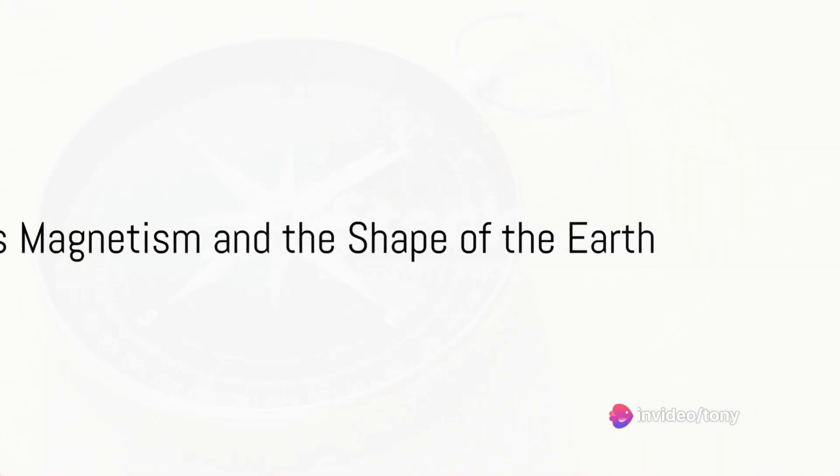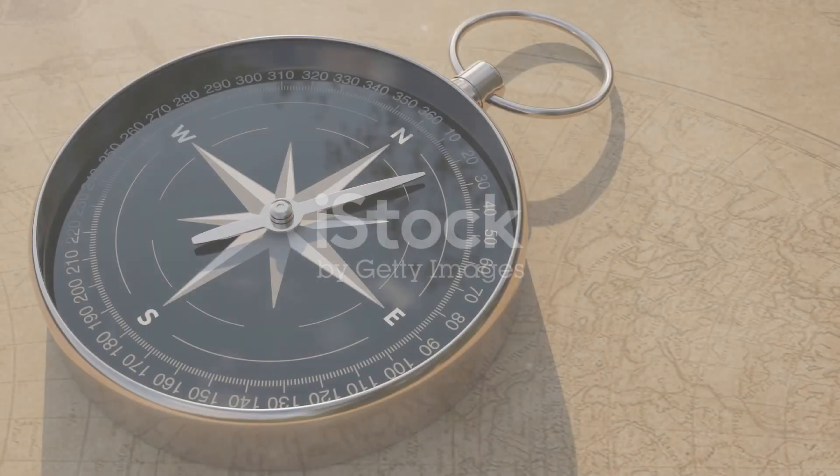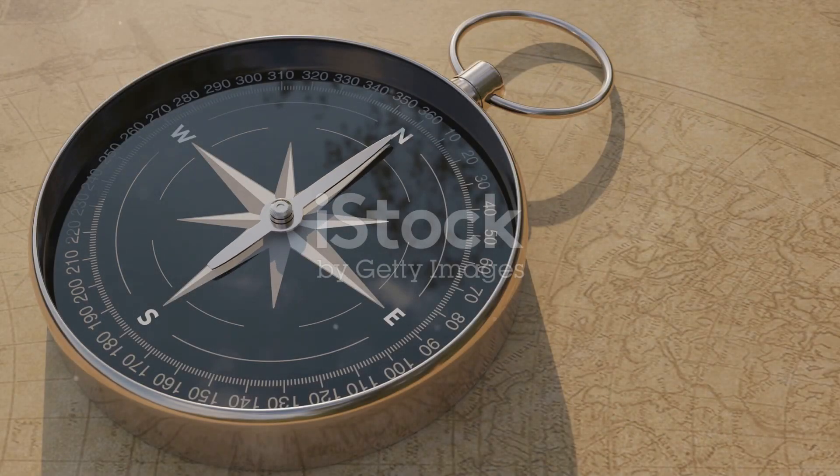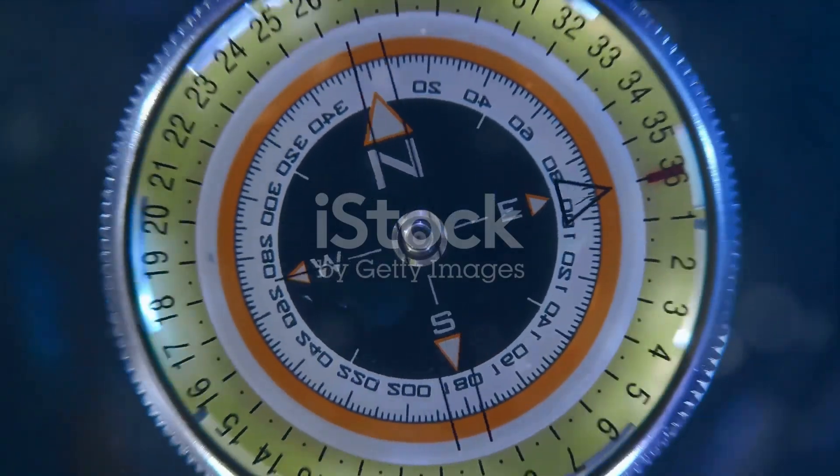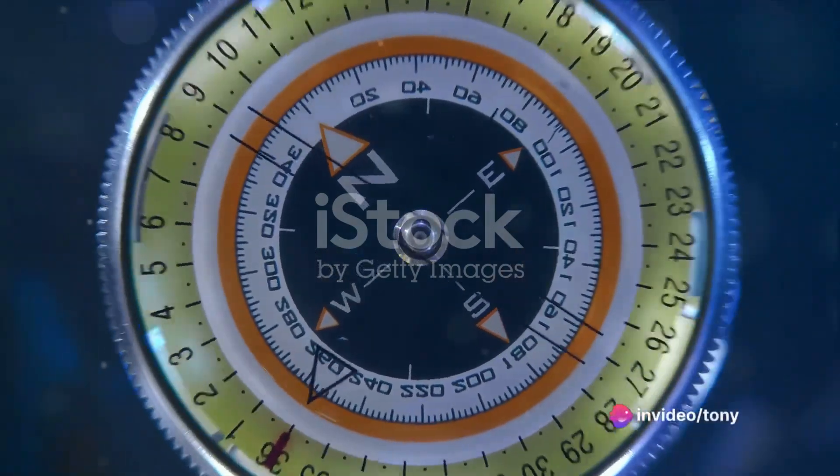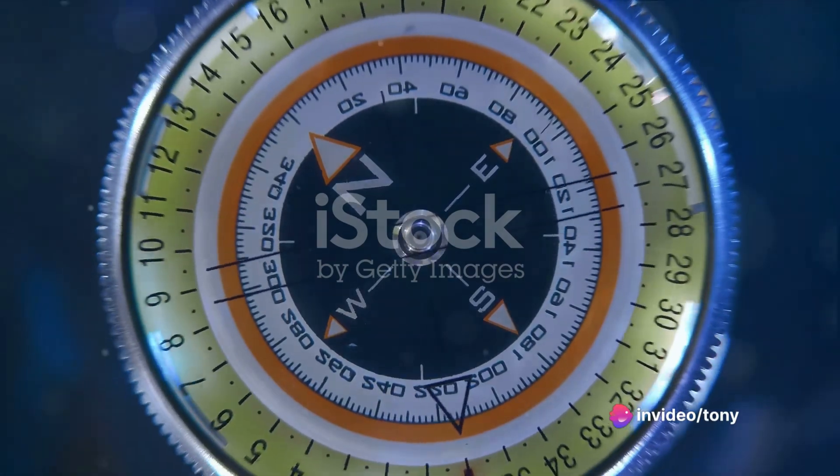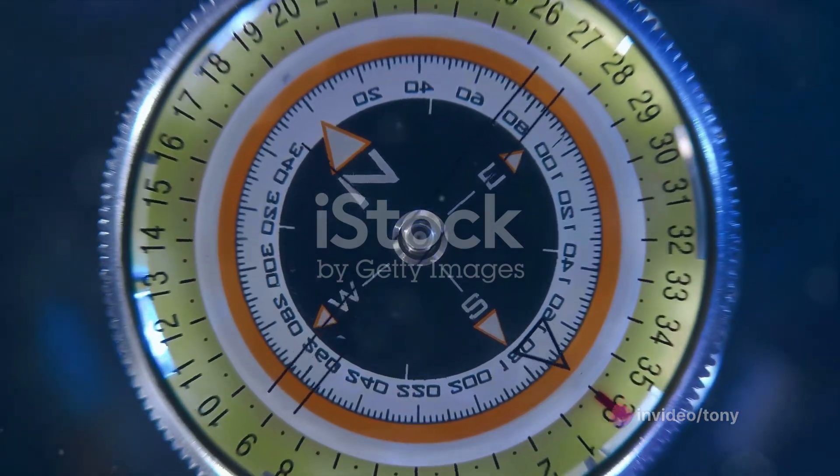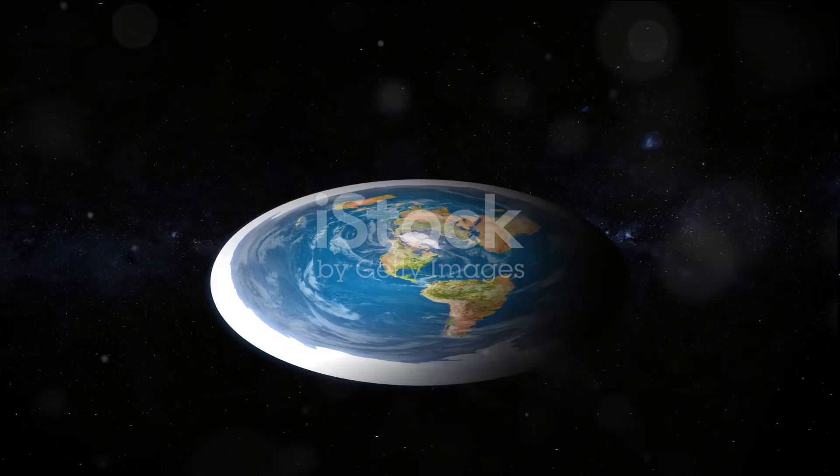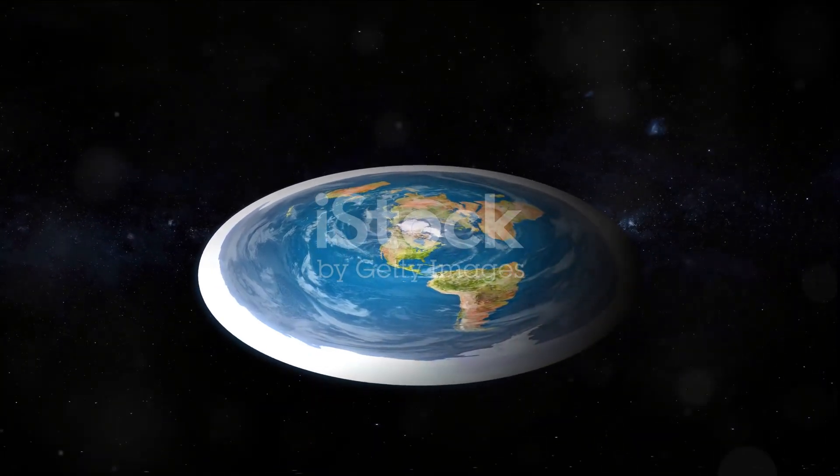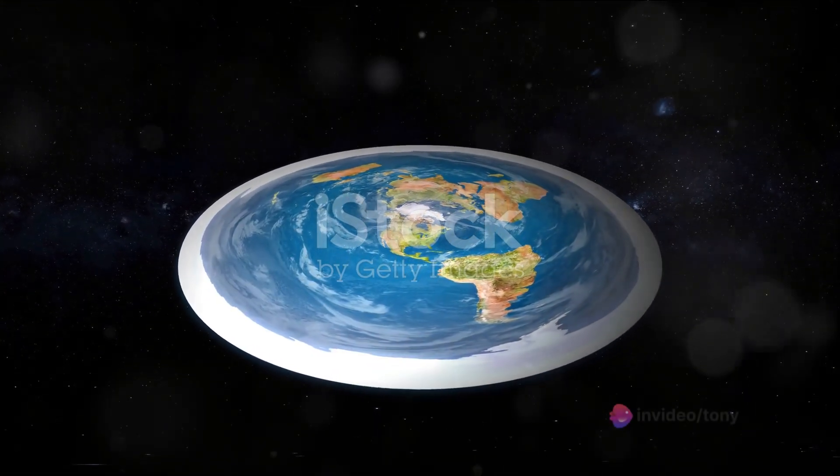Now, how does the concept of Earth's magnetism relate to its shape? If the Earth were flat, our compasses wouldn't work as they do. They point towards the North because of the Earth's magnetic field, which is shaped by the movement of molten metals within the Earth's spherical core. On a flat Earth, this magnetic field would behave differently, and our compasses would not consistently point north.